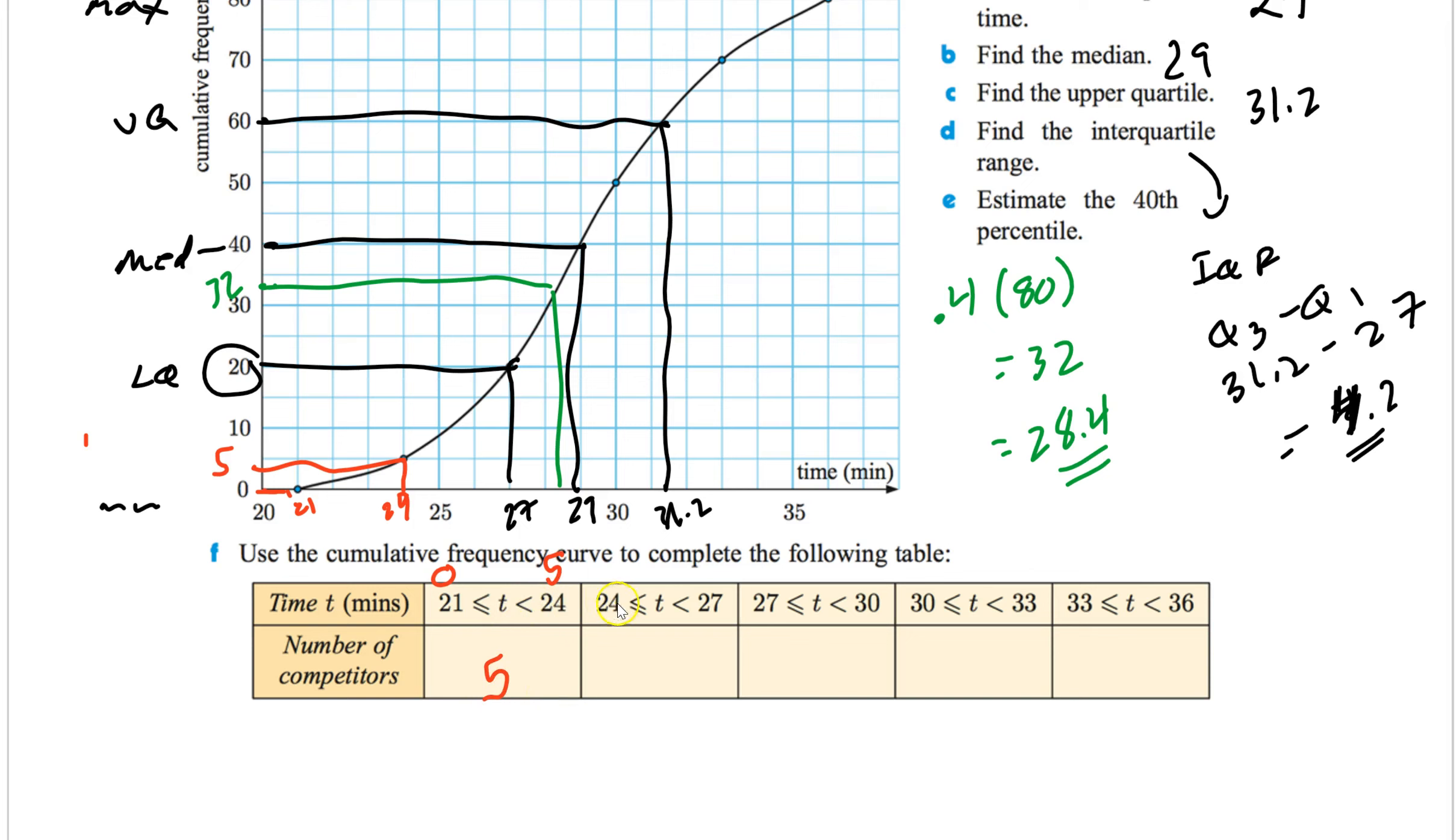Now notice how this one right here starts at 24. So we know that's 5 already. So we just got to go to 27. And based on what I did earlier, 27 is at 20. There's 20 people at 27. So the number of people that fit in between 24 and 27 is just 15. Then we have 27, which we already know is 20. So now we got to go to 30. 30, follow this graph up and across. Looks like 50 for 30. At 50 minutes, 30 people thought. So then you subtract those and you get 30.